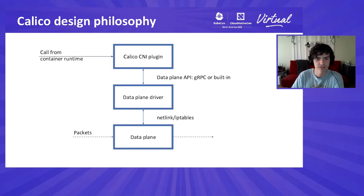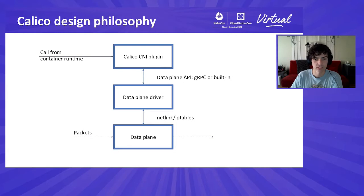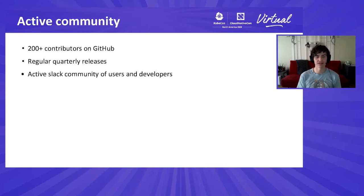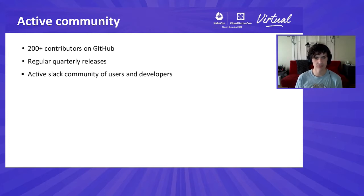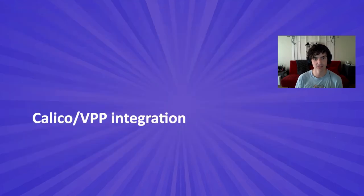The Calico CNI plugin also supports gRPC-based data plane drivers, in addition to the default compiled-in implementation. This was a feature added by Alois as part of the VPP integration effort — which leads me to the last and most important ingredient of Calico, which is its collaborative community. It's through this community that we've been able to build a relationship with Alois and his team, who will now share how he's built upon this foundation to bring VPP support to Calico.